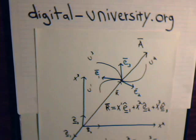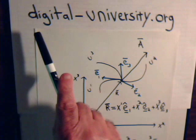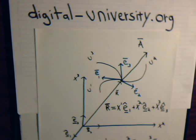This is video 21 in our series, Topics in Tensor Analysis. A reminder that the playlist for the videos is at the website digital-university.org. In this video, we're going to examine the Christoffel symbol and see if it actually transforms according to the properties of a tensor.